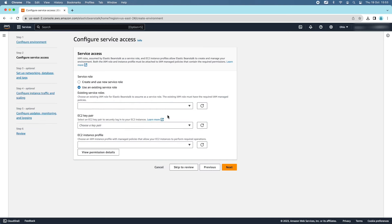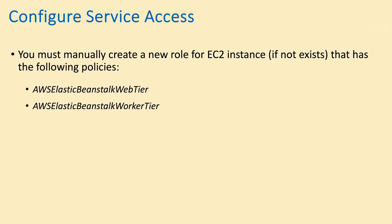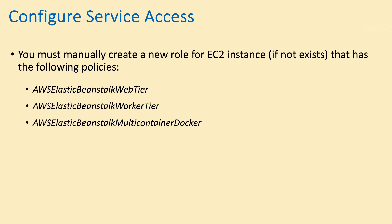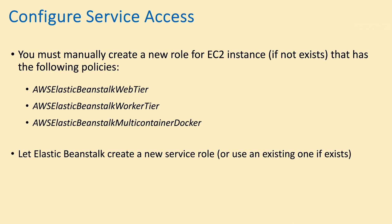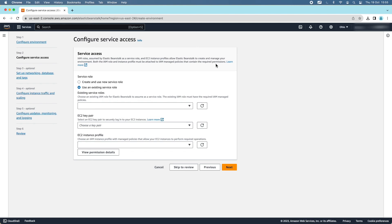The second step is Configure Service Access. Note that you must manually create a new role for the EC2 instance if it doesn't exist. That role must have the following policies: AWSElasticBeanstalkWebTier, AWSElasticBeanstalkWorkerTier, and AWSElasticBeanstalkMulticontainerDocker. Let Elastic Beanstalk create a new service role or use an existing one. Let me show you how to do this second step.